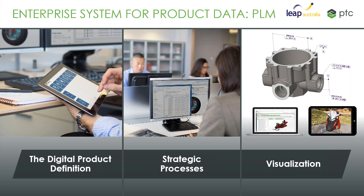There are three main columns here. First, the digital product definition — designed to manage all of the digital content that you create that describes your products. Second, the processes around that — how we handle changes, release information, and so on. Third is visualization: giving other users within the organisation the ability to view and work with that data.